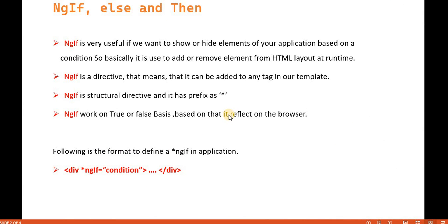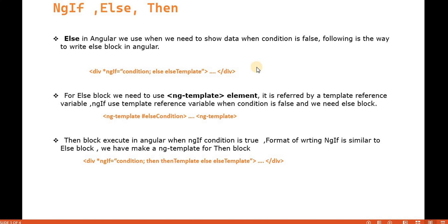Currently we have used only ngIf. But what if we use an else block — if the condition is true, print that; if not, print another value? In Angular, when we need to show data when a condition is false, the following is the way to write the else block. We write star ngIf with the condition; if it is true, then that block, else another value. That else code block we can write using ng-template — so using ng-template, we write it as else followed by the condition.